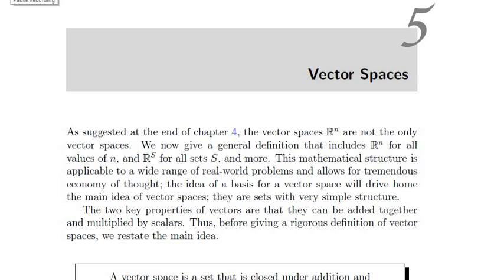In this chapter we talk about the general definition of vector spaces. We've seen Rⁿ and its properties, and Rⁿ is going to be our standard example of what a nice, well-behaved vector space should look like. But there are other examples, some of which are very practical and important in different aspects of mathematics.